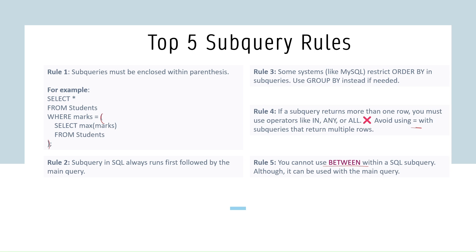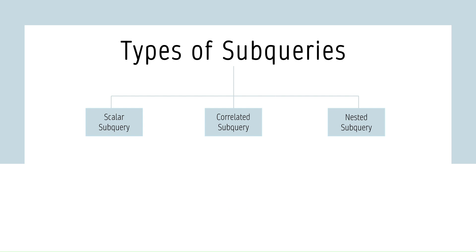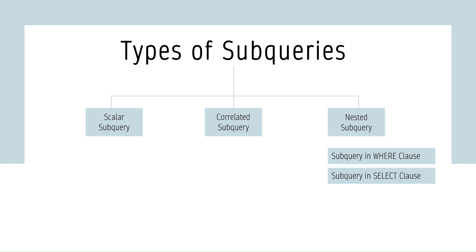Let's now deep dive into the types of subqueries in SQL. Subqueries come in different forms depending on where they are used and how they behave. The three types are: scalar subquery, correlated subquery, and nested subquery. Nested subqueries are further categorized by where they appear: in the WHERE clause, in the SELECT clause, or in the FROM clause.